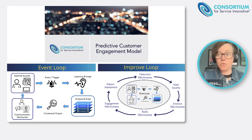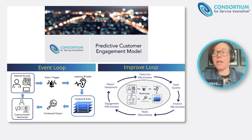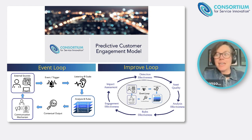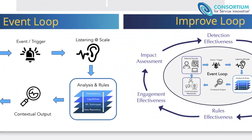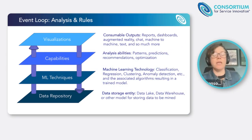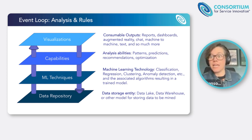We're coming back now to an idea that's been around for a little while and let's poke at it and make sure that it's still relevant and useful. I want to go back just for a minute to this piece of the predictive customer engagement loop, or double loop model. In the event loop, there's the box that has analysis and rules in it.